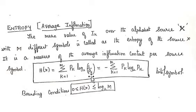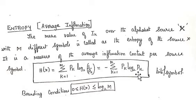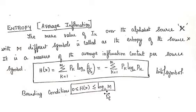If we bring pK from the denominator to the numerator, we get a minus sign, so the formula becomes H(X) = minus summation k=1 to M of pK log pK to the base 2. The boundary conditions are: the lower bound is 0 and the upper bound is log M to the base 2. Basically, entropy tells us the amount of information that must be delivered in order to resolve uncertainty about the outcome of a trial.